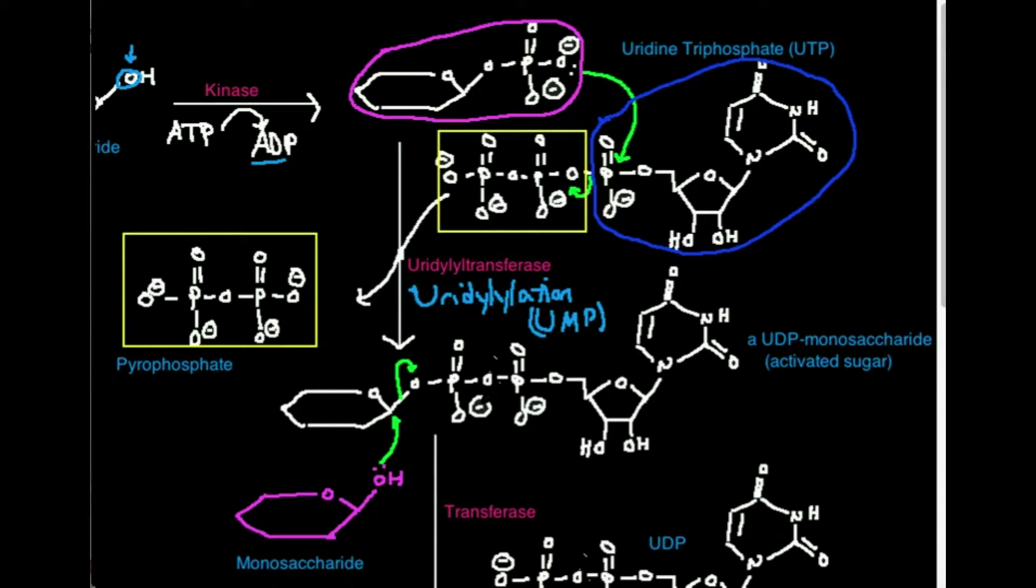So let's go over the reaction very quickly. So I have this phosphorylated monosaccharide. It's going to be condensed with the phosphate right here of UTP.